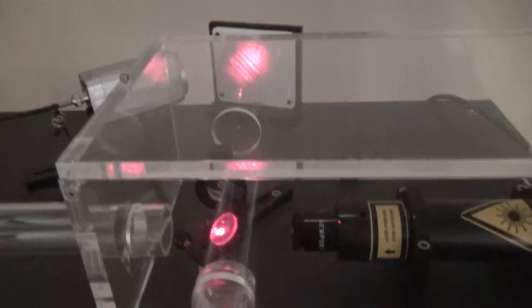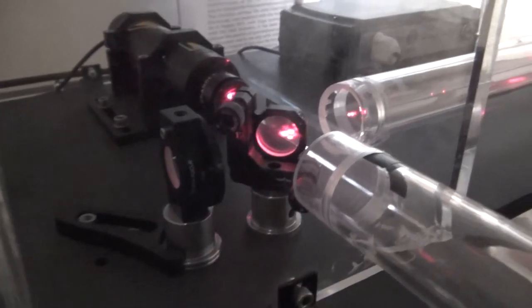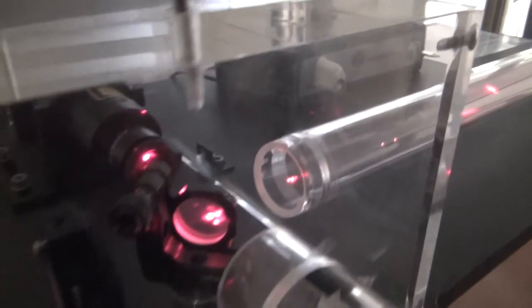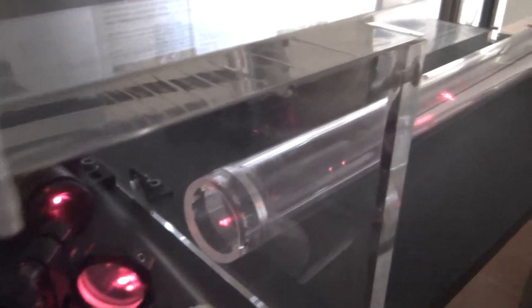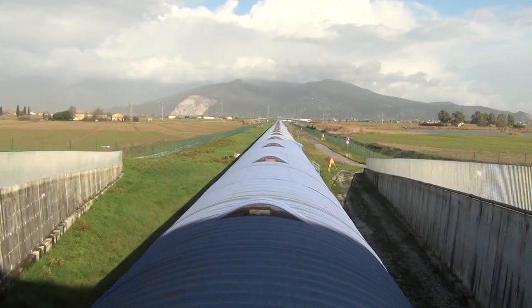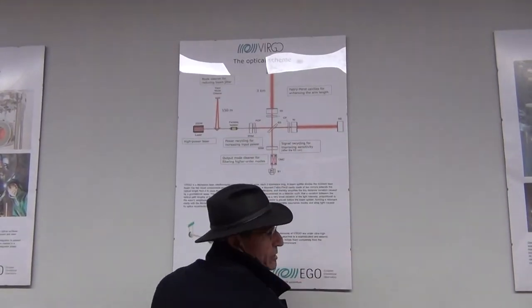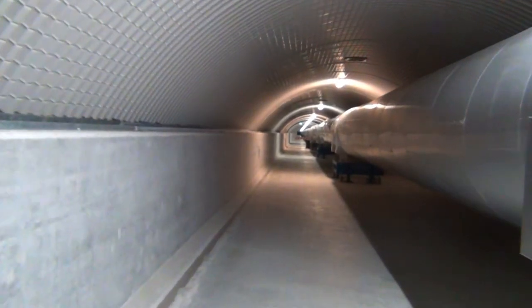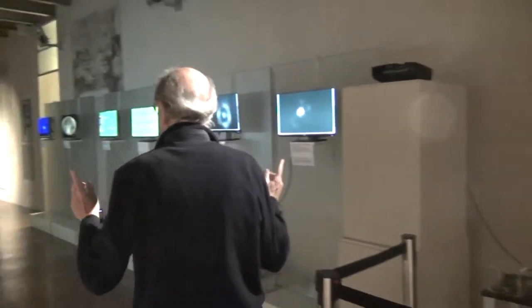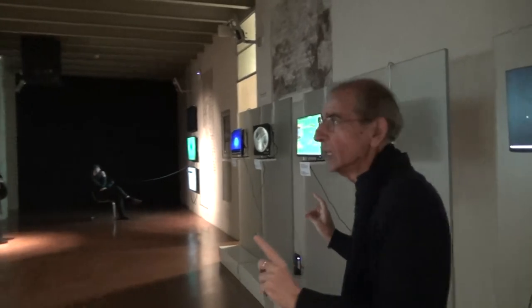Here there is a room which is a copy of what we have in Virgo. You see first of all the prototype of an interferometer. When the gravitational wave comes, these mirrors that we try to keep at the best possible state start oscillating, and this oscillation we see as a modulation of the interferometric signal.